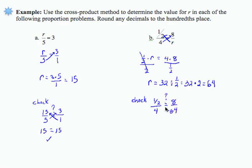I'm going to do a double cross product, and I get 1 half times 64, and does that equal 32? Well, 1 half times 64 is the same thing as 64 over 2, and does that equal 32? 64 over 2, if I divide, I do get 32. Therefore, my solution of R equals 64 checks.